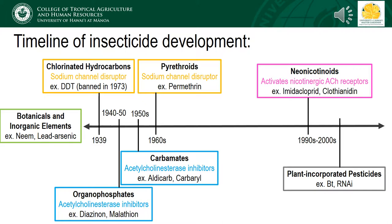For as long as people have been growing food they've had issues with pest insects. Some of the oldest Chinese documents pertaining to agriculture describe the use of arsenic to combat rice pests. As cities grew and the demands for food became greater, so did the need for better insecticidal agents. This figure gives a relative timeline of when many of the pesticides still in use today first hit the markets.